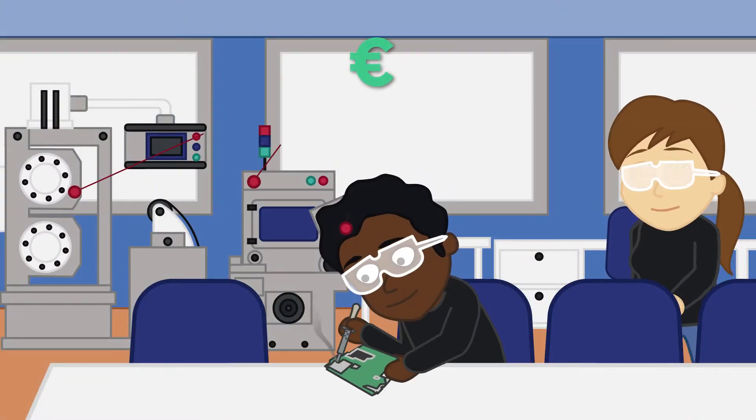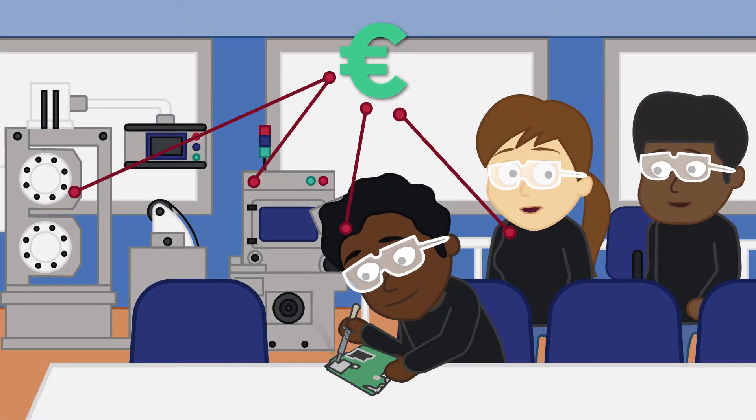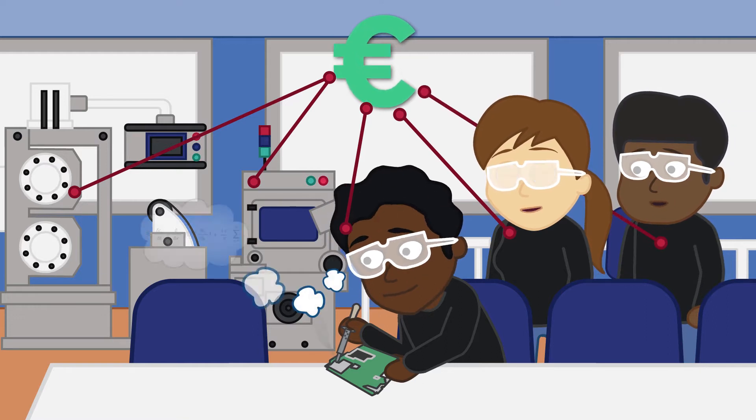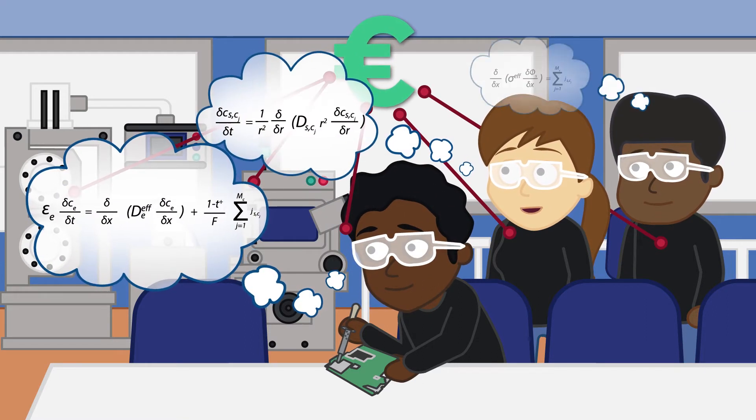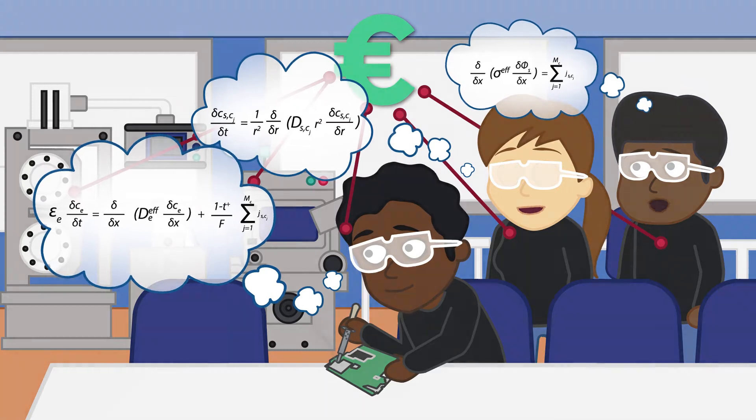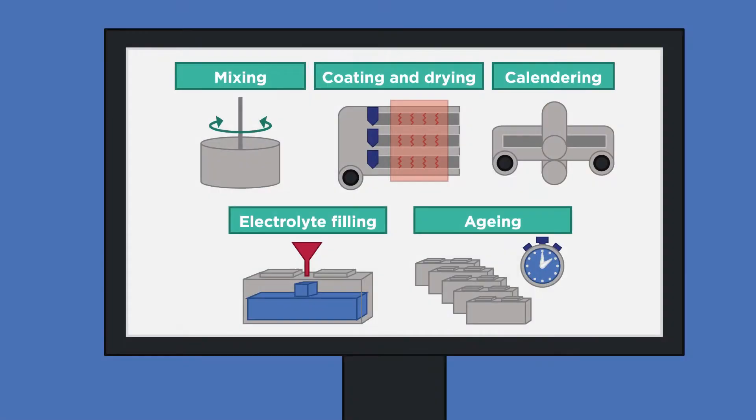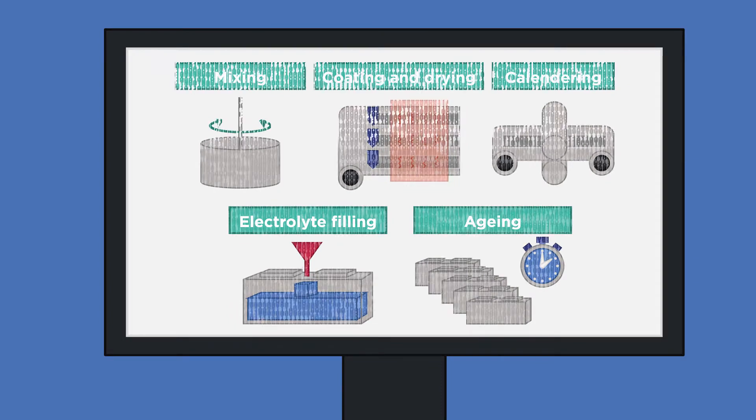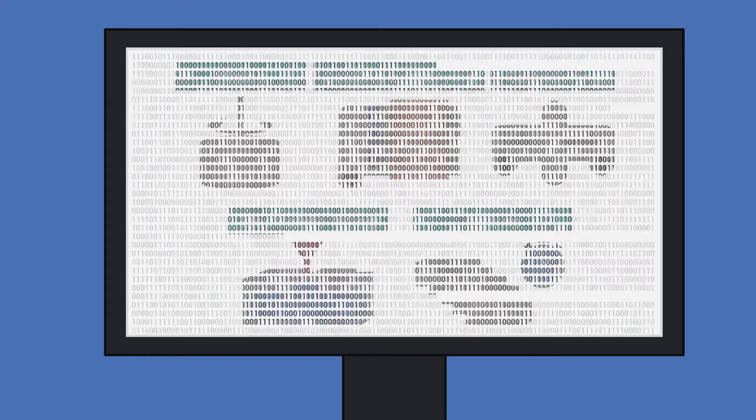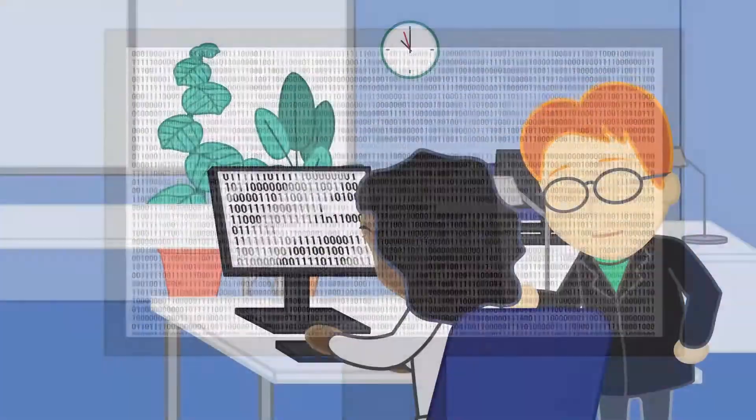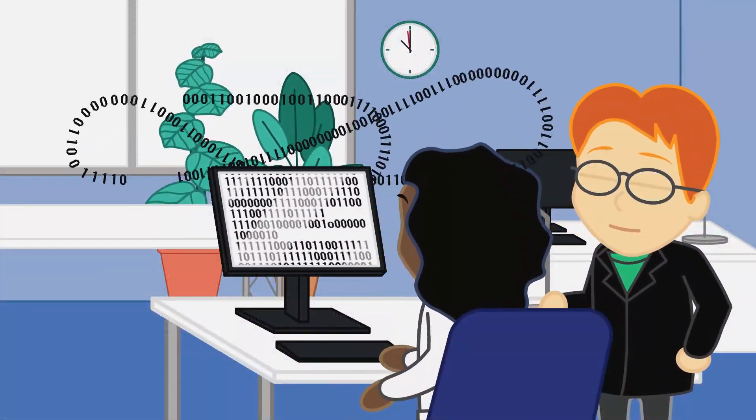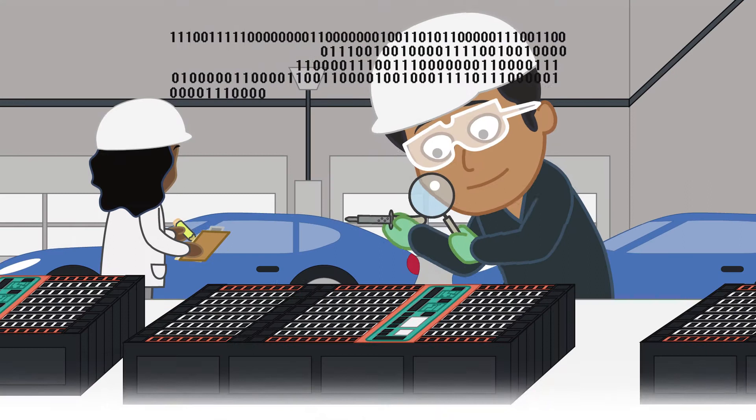Currently, companies incur high costs in their efforts to improve the design and manufacturing process of high-performance battery cells. To improve these processes, DEFACTO will develop a set of multi-physics and multi-scale modeling tools to expand the understanding of cell material behavior, with the aim of reducing the time and economic resources required for the market uptake of cell innovation.